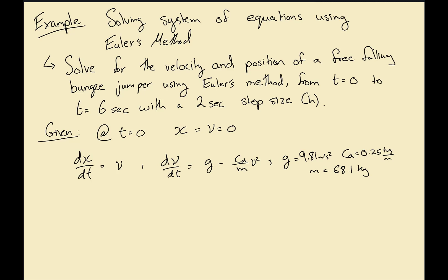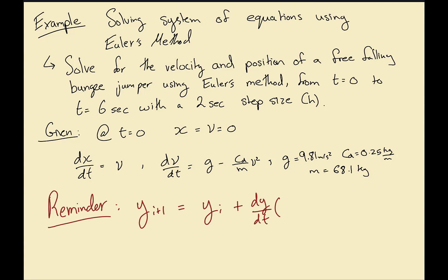As a reminder, Euler's method is: yi+1 = yi + (dy/dt) evaluated at (ti, yi) times h. Note that in this case we have two variables.